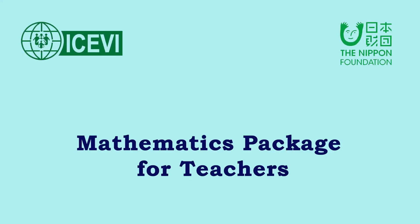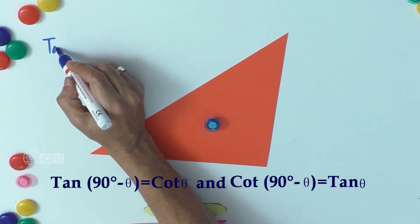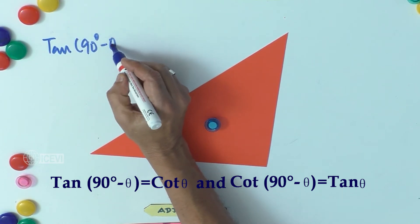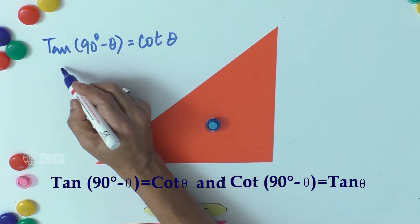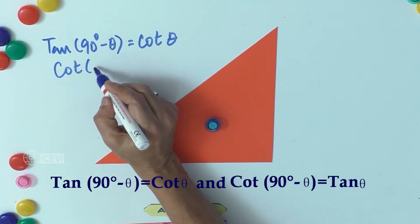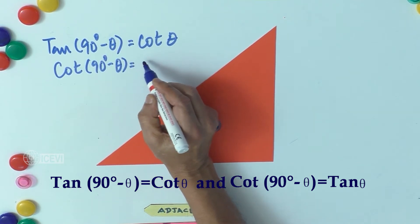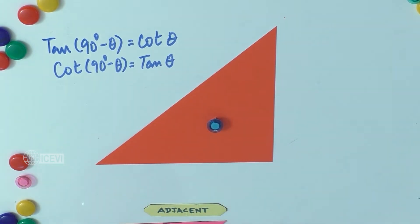The ICBI Nippon Foundation Mathematics Package for Teachers. The title of this video: let us prove tan(90° − θ) = cot θ and cot(90° − θ) = tan θ.